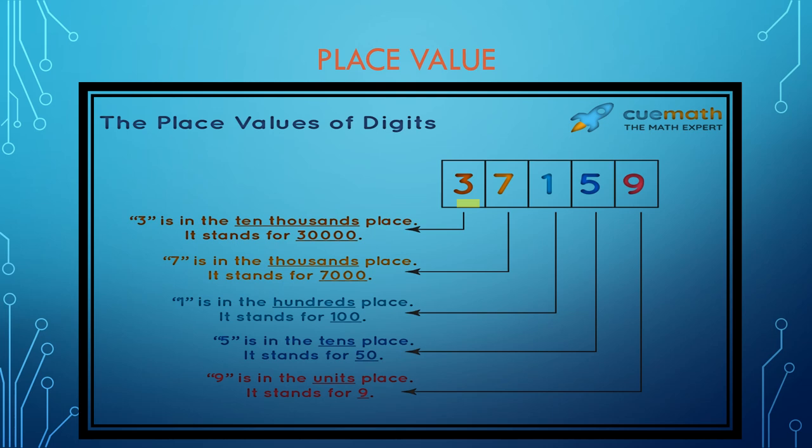Three is here. Three is in the ten thousands place and it stands for 30,000. Seven is in the thousands place and it stands for 7,000.